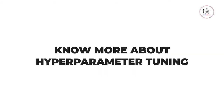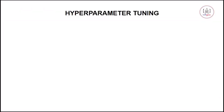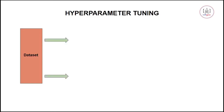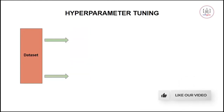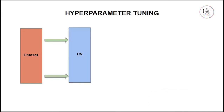Welcome everyone. In this video we are going to see how to tune your hyperparameters. To understand hyperparameter tuning, let's first understand how we build our models. We have a dataset, and after doing all the pre-processing we split it into a training set and testing set. But there is a problem with randomly choosing this training and testing set, which is why we use k-fold cross validation.